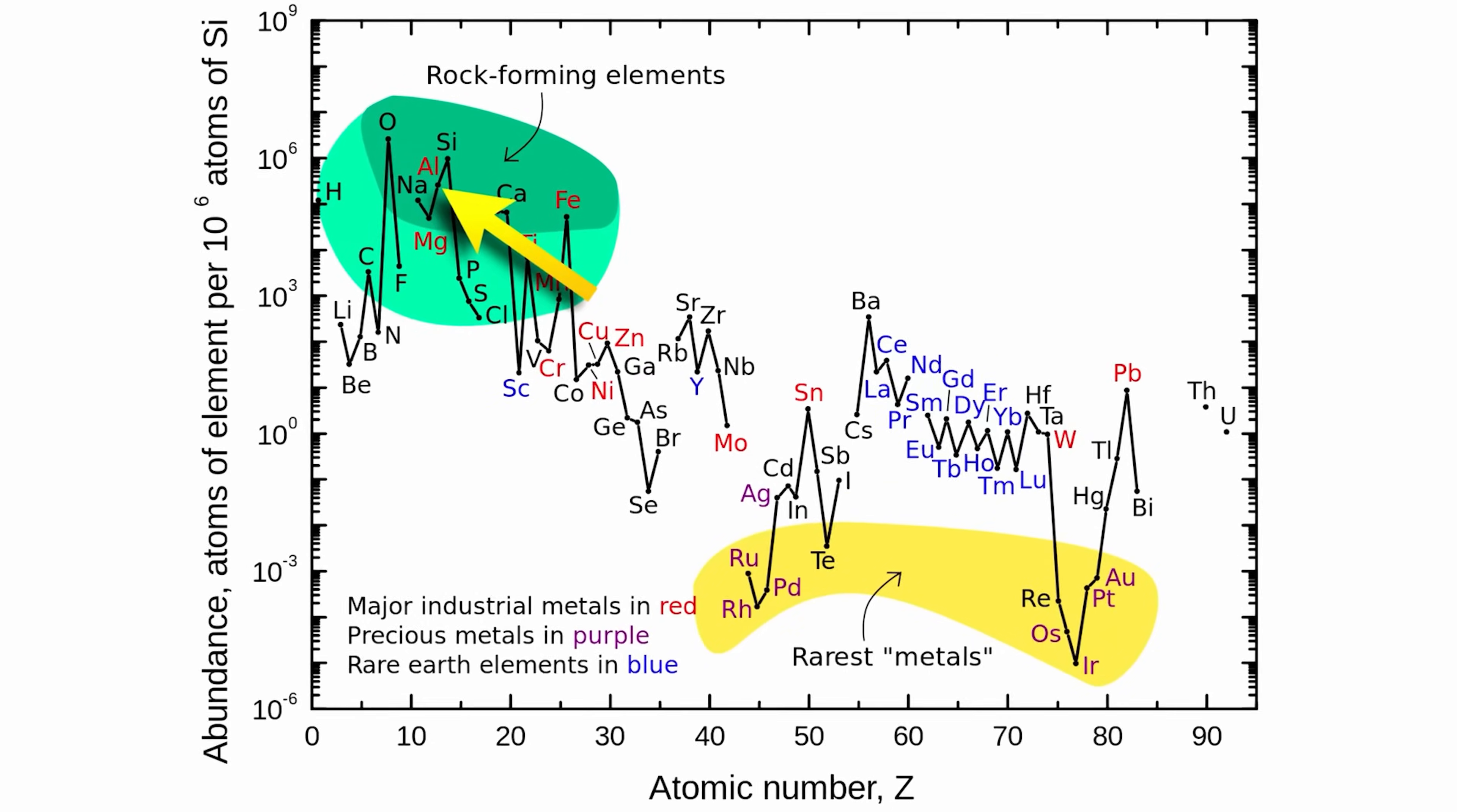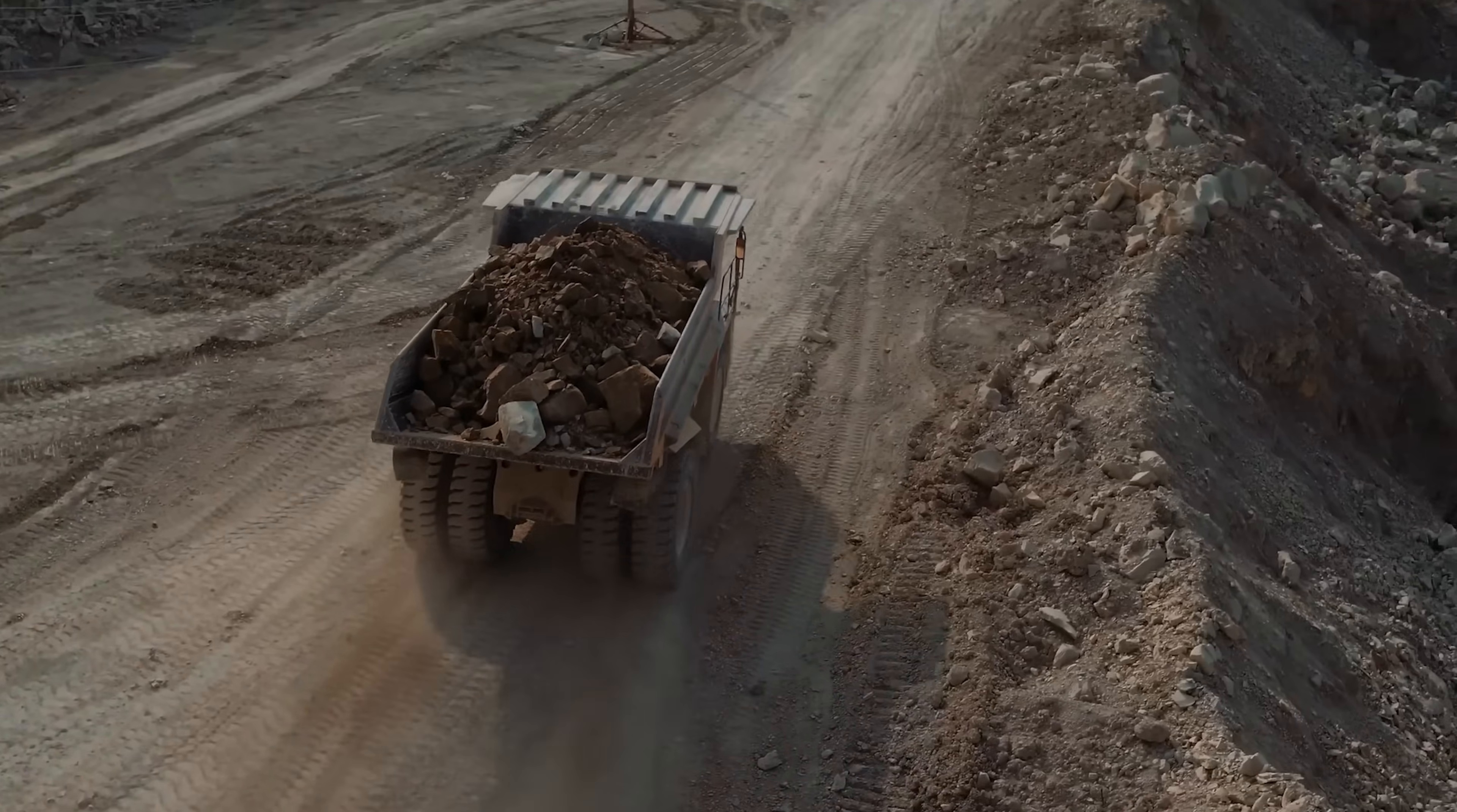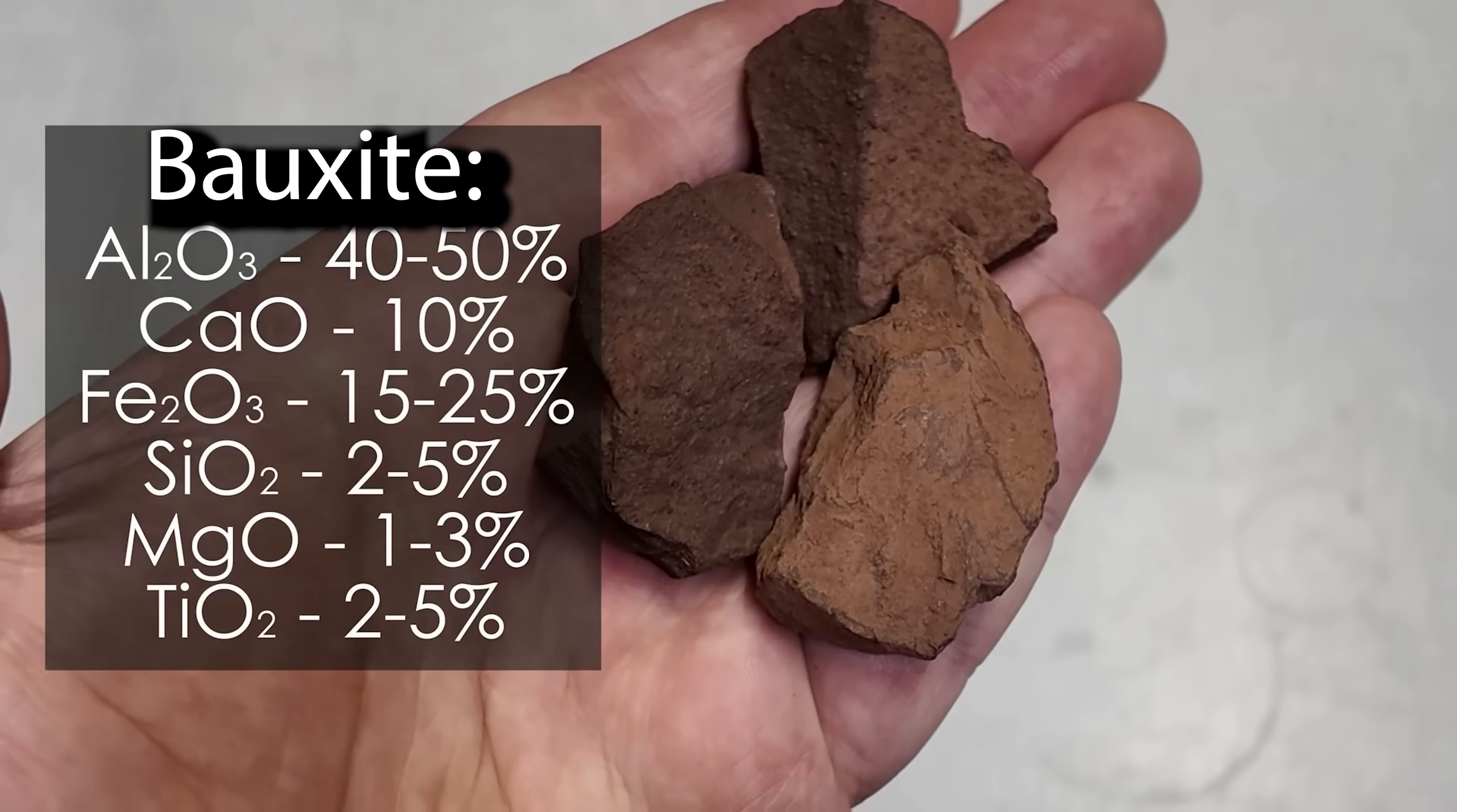Even though aluminum is the most abundant element in the Earth's crust, obtaining aluminum from its compounds is a challenging task. The production of light and strong aluminum begins with its ore, bauxite, the largest deposits of which are located in Australia. Bauxite itself is often red in color due to iron oxide impurities, but the bulk of it is made up of various aluminum hydroxides with admixtures of silicon oxide or sand, as well as chalk and other unnecessary minerals.